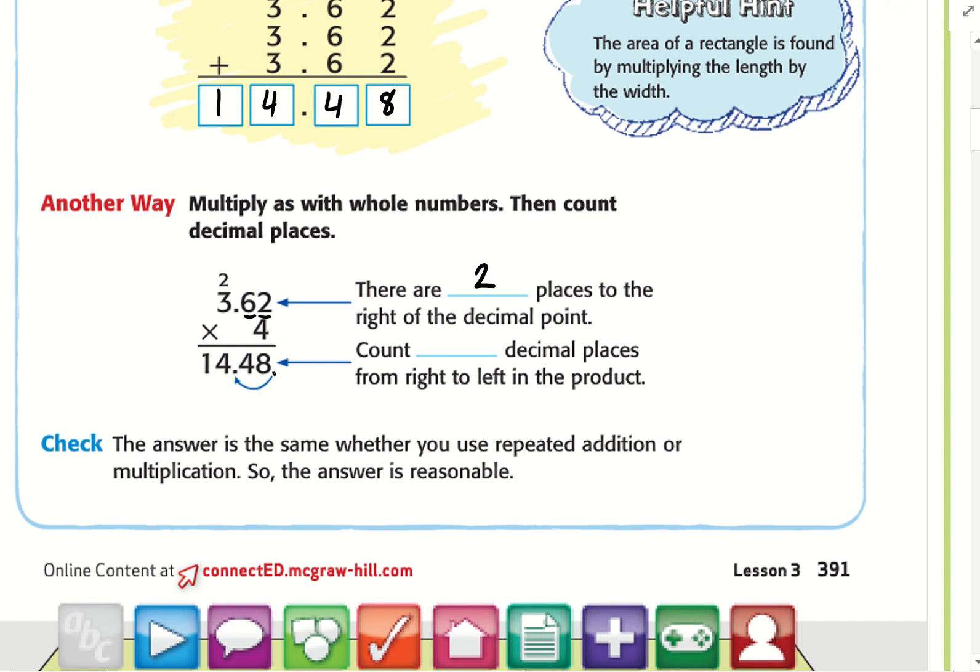I'm going to start from the end here and count two decimal places from right to left. In my factors, I have two places to the right of the decimal, so in my product, I'm going to move the decimal place twice to the left.